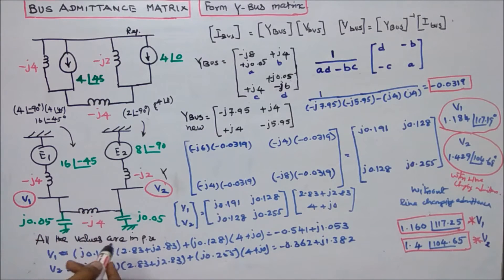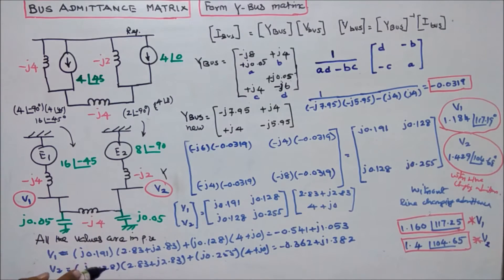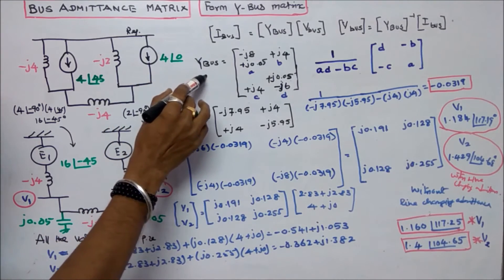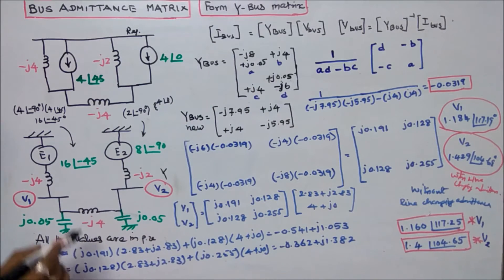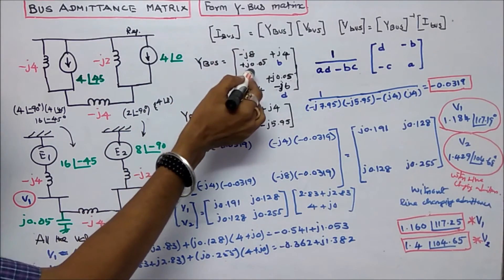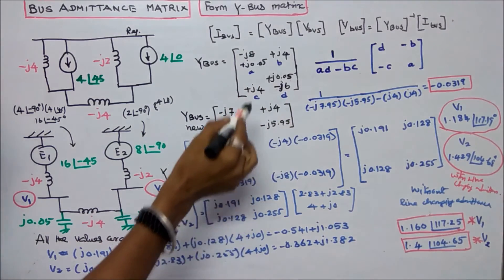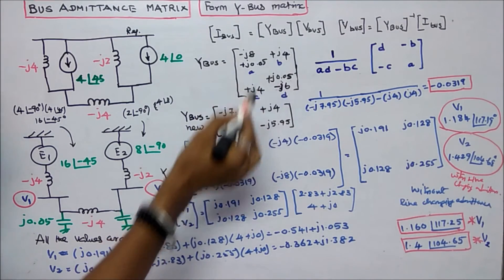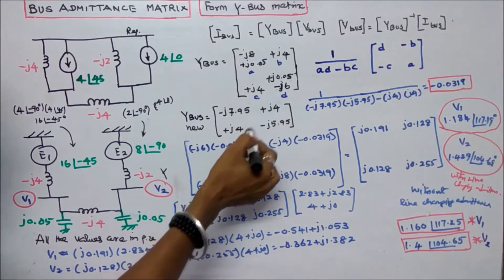In the same problem, we now add line charging admittance of J0.05 and J0.05. The question is to calculate the new Y-bus matrix and also the bus voltages V1 and V2. The old Y-bus matrix was [minus J8, J4; J4, minus J6]. Adding line charging admittance to the diagonal elements: minus J8 plus J0.05 equals minus J7.95, and J0.05 minus J6 equals minus J5.95. The off-diagonal elements remain J4 and J4.